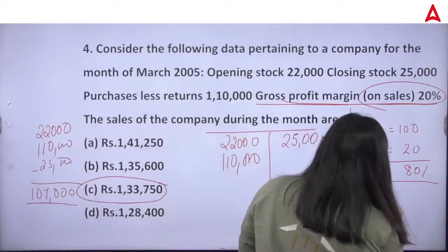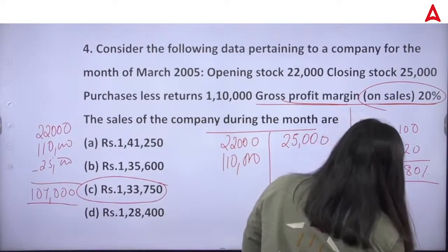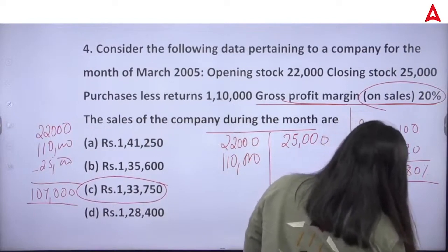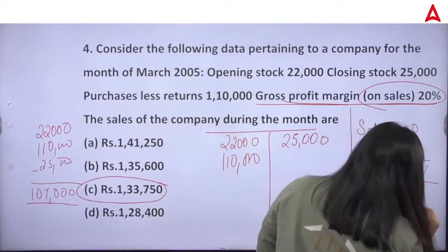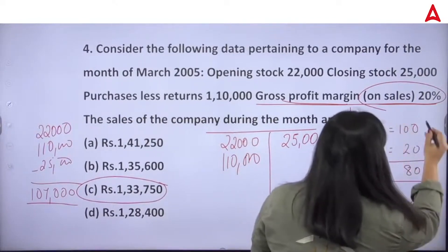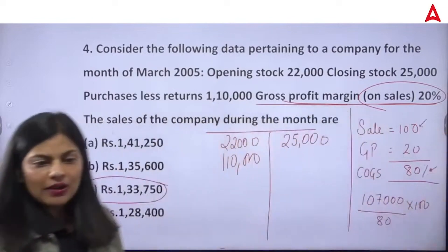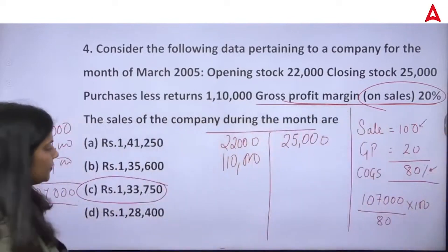Cost of goods sold is $1,07,000, which is 80%. So if it is 80%, what is 100%? The sales figure comes out to $1,33,750.